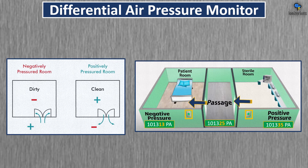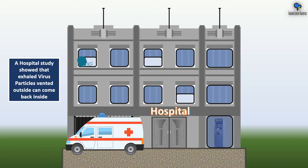The negative pressure room has less pressure than the positive pressure room. You don't need to do this — I just wanted to show it as an example. Opening windows can affect air pressure. A study showed that exhaled virus particles vented outside can actually come back inside. If a person is coughing out virus particles, they can go outside and travel back inside through open windows in different rooms or on different floors.